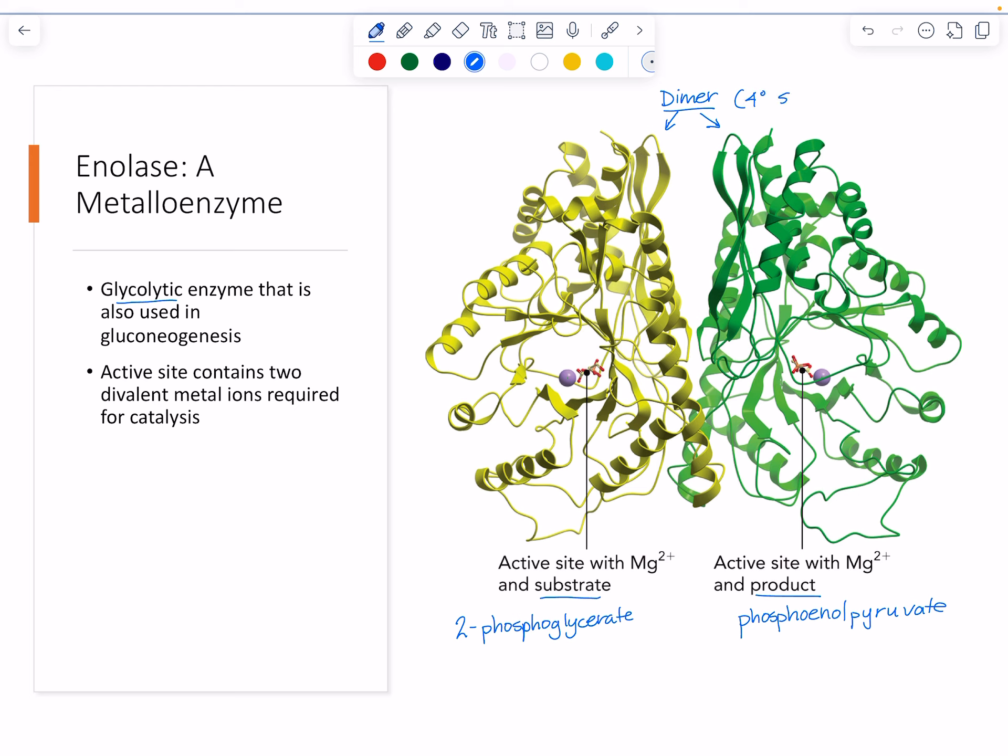We have quaternary structure in this enzyme, so we have two active sites per dimer. The active site itself contains two divalent metal ions, two magnesium plus ions, and those are required for catalysis. In this figure, only one of the metal ions is shown as a purple ball. We'll see as we zoom into the active site there's going to be another one also in the active site. What's shown on the left is the substrate and one of the magnesium ions. What's shown on the right is one of the magnesium ions with the product.